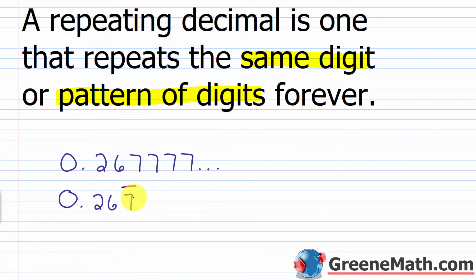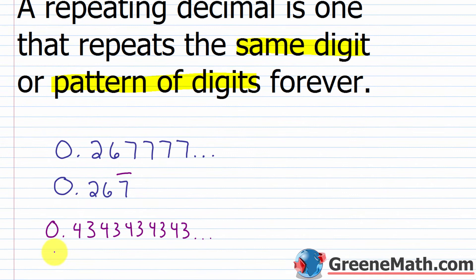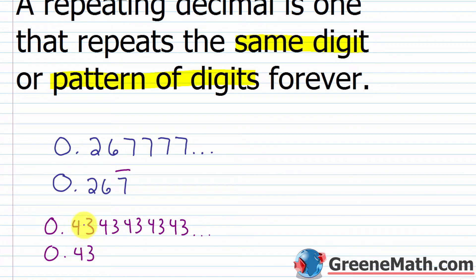As another example, let's look at 0.43 where 4 and 3 repeat forever — so 434343 and so on. I can use three dots or write 0.43 with a bar on top of the 4 and the 3, because that pattern of digits is going to repeat forever: a 4 and then a 3, a 4 and then a 3, and so forth.